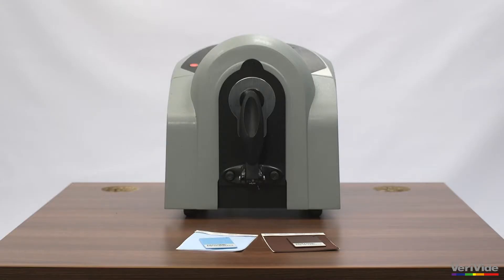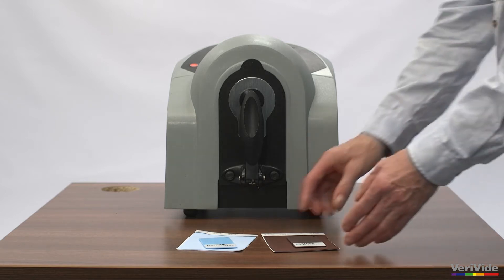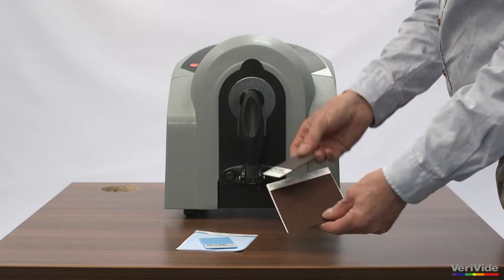A benchtop spectrophotometer is an accurate instrument for measuring colour of flat samples, such as plain fabrics and plastics.